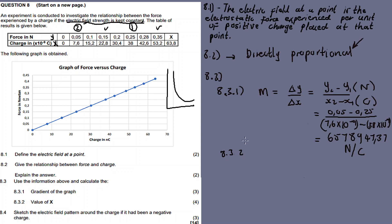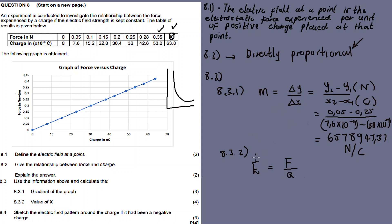8.3.2: We use the gradient value to calculate the unknown value. The electric field strength E is equal to force over charge, so E = F/q. The electric field strength is also calculated as force divided by charge. In scientific notation, the gradient is 6.58 times ten to the exponent six.